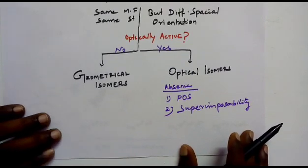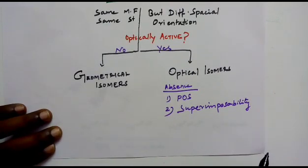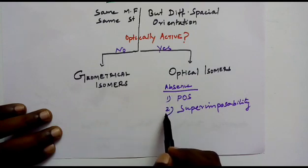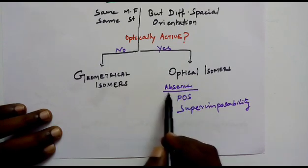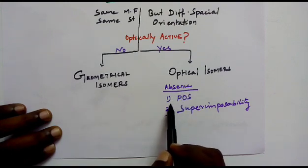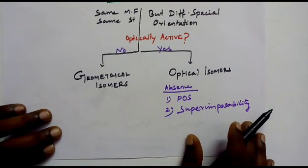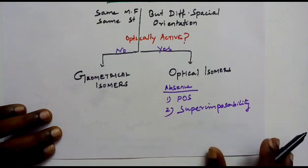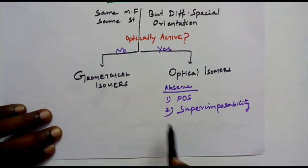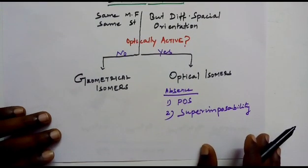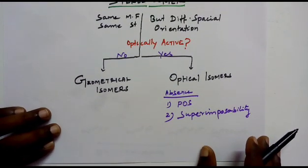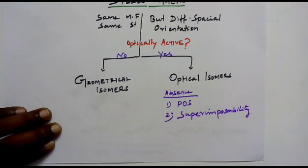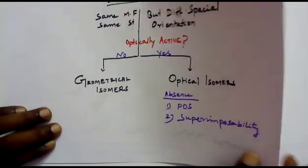In order to be able to rotate the plane polarized light, the complex should fulfill two conditions — these two elements should be absent. First one is plane of symmetry; there should not be a plane of symmetry in a molecule. Second, there should not be superimposability of mirror images — the complex and its mirror image should not be superimposable. If these two elements are absent, the molecule is optically active and is capable of rotating the plane polarized light clockwise or anti-clockwise.